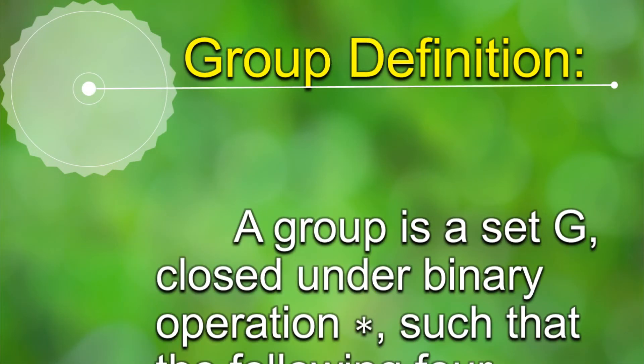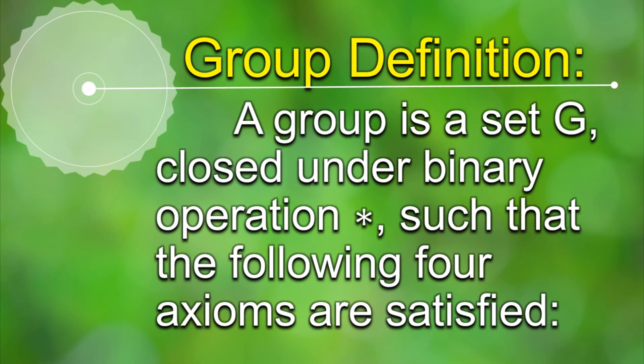First of all let's see the definition of the group. A group G is basically a set which is closed under the binary operation star, along with four other conditions which I will explain in a little while.